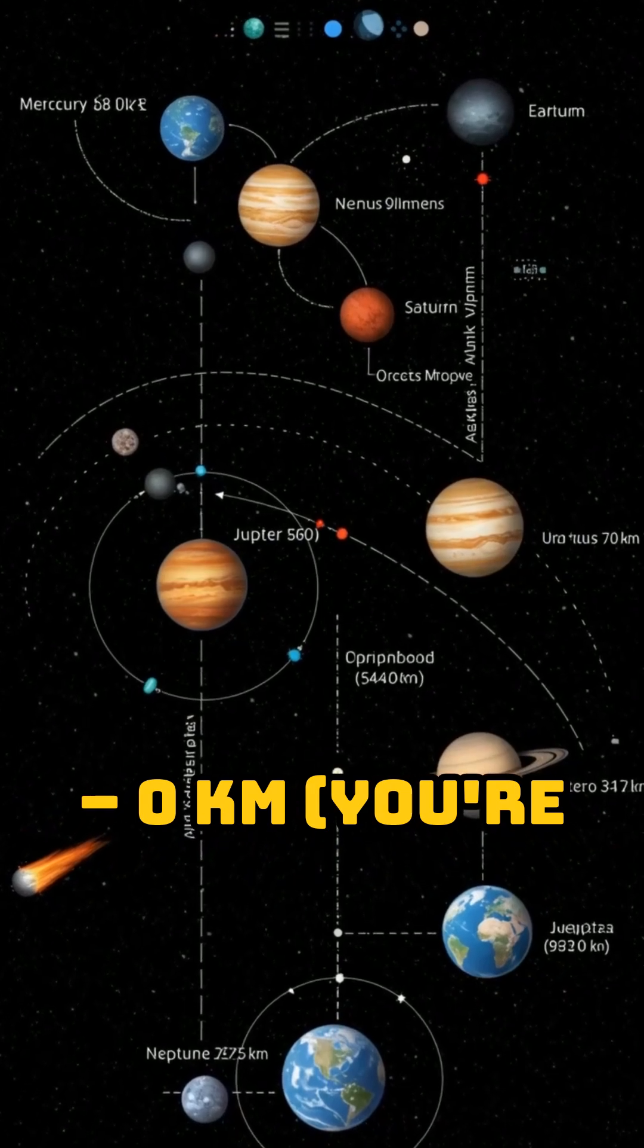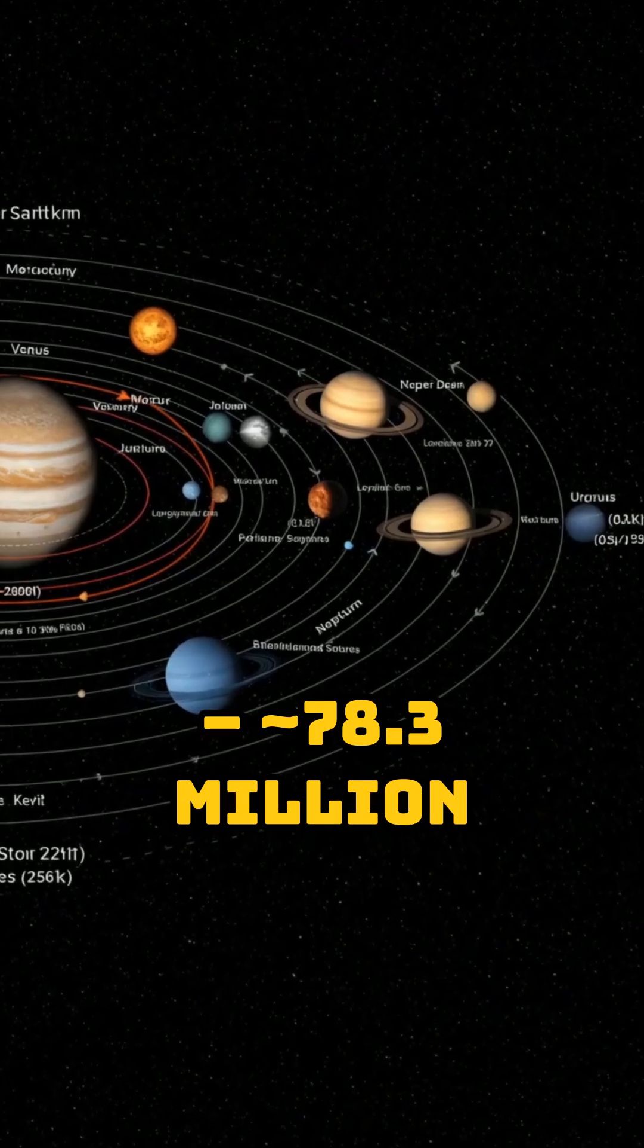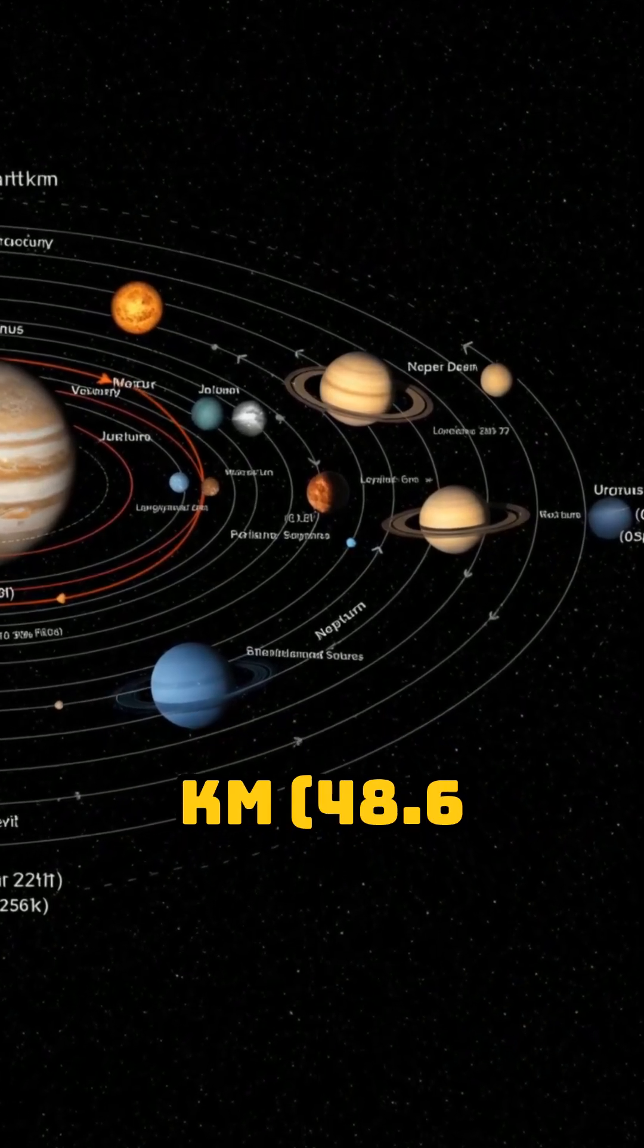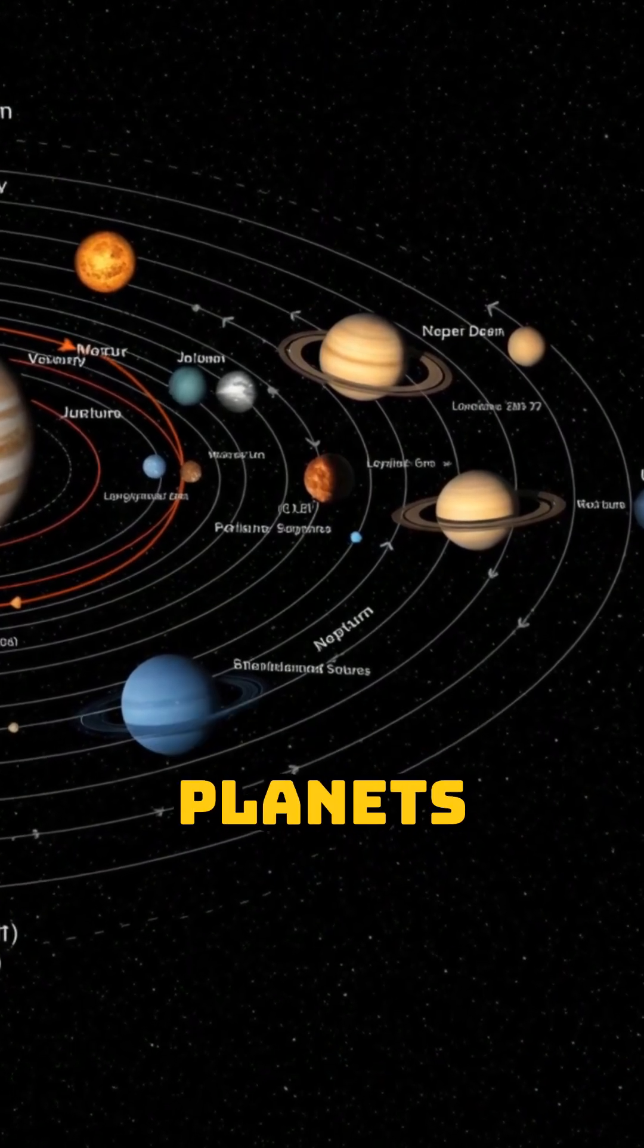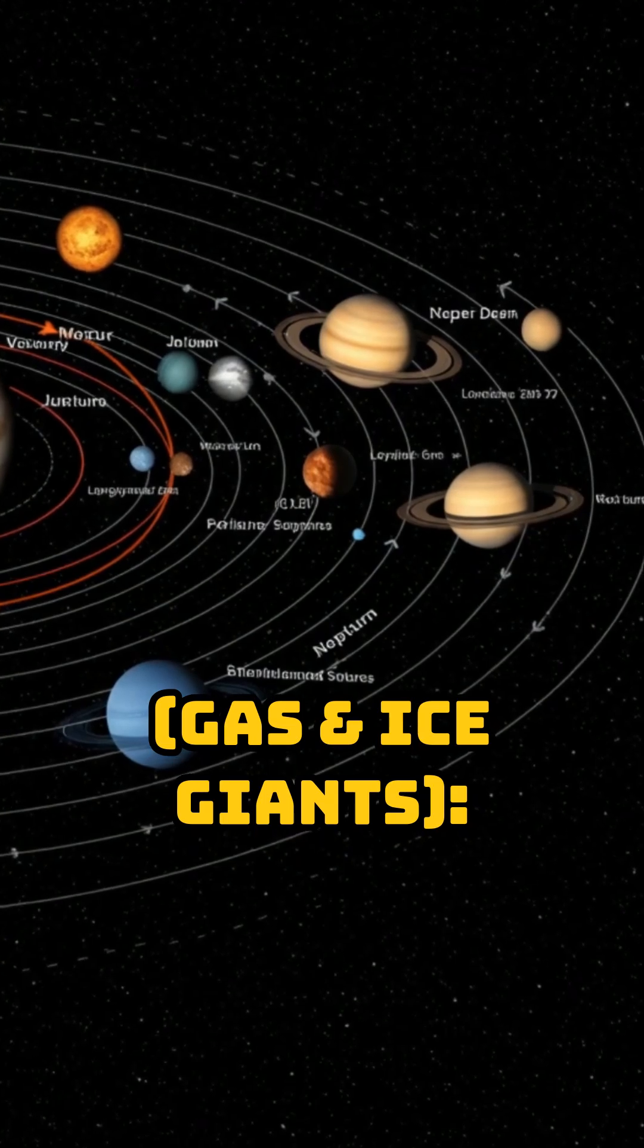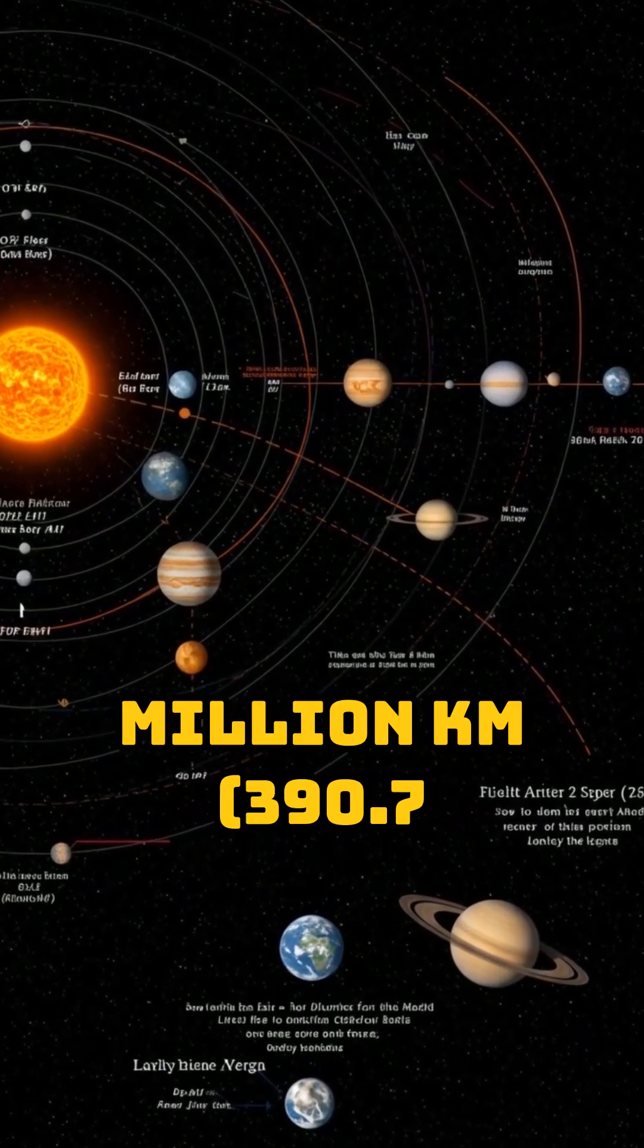Mars, 78.3 million km, 48.6 million miles. Outer planets, gas and ice giants: Jupiter, 628.7 million km, 390.7 million miles.